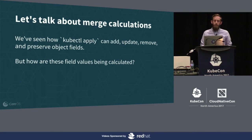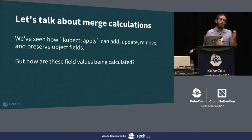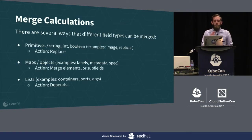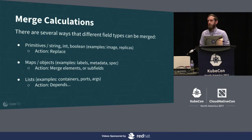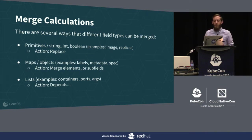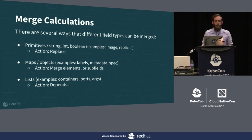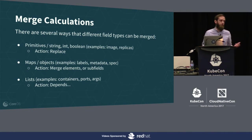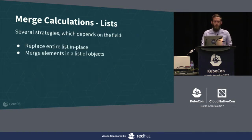So kubectl apply can add, update, remove, preserve, and enforce fields. How is this being calculated? How are we deciding some fields should be left alone while others are updated or cleared? There are several ways the merge takes place. For primitive values - strings, integers, Booleans, like the image field or replicas - the actions are essentially either clear or replace. For maps and objects - like labels, metadata, or the deployment spec - the action is to merge the subfields. And then there are lists, where the action depends quite a bit - I want to jump into that because it can get more complex.